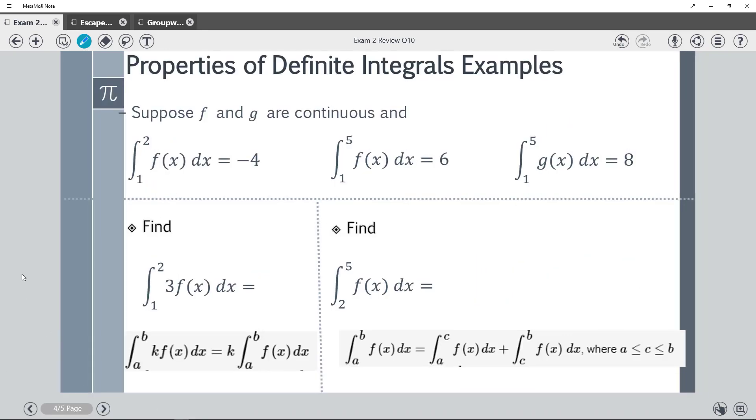Next, we go from 1 to 2 f(x). Looks like that's this one here. This is simply our constant that can be brought out front, and then multiplied by negative 4. And thus we get negative 12.